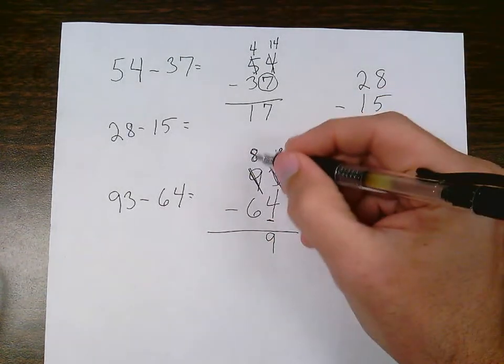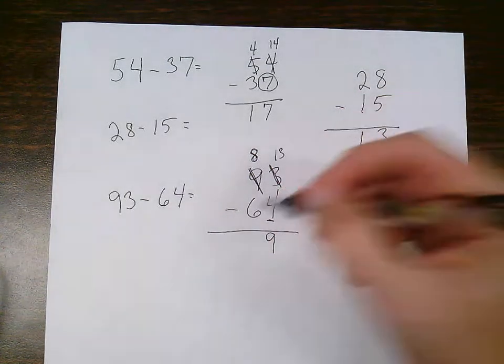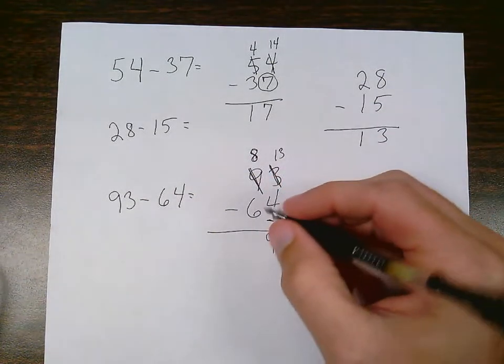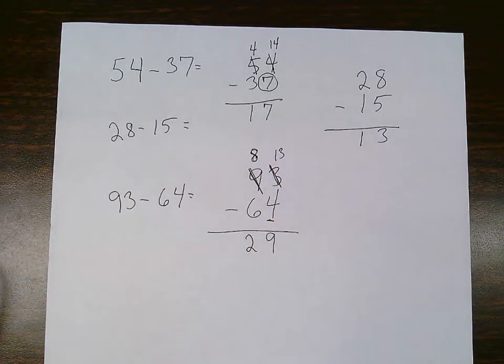And I move on to my next column, and I ask myself the question, can I do it? 8 minus 6, I can. 8 minus 6 is 2. And my answer is 29.